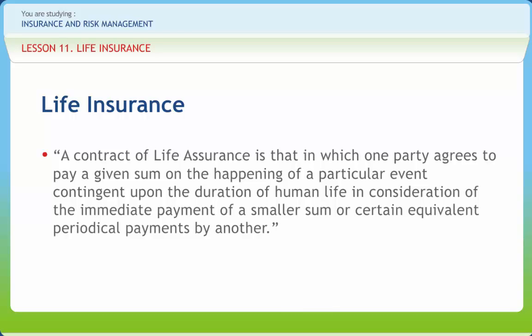An untimely and premature death of the bread earner brings economic disaster to the dependent family. The government can have some social security schemes for the socially and economically backward sections of the society, that is, for people below the poverty line. Group efforts can be made available through group life or accident or health insurance schemes. A person makes his own personal financial plan and decides where he would like to invest his savings. Several instruments are offered by the public sector and private sector. There is nothing more uncertain than life and nothing more certain than life insurance. Hence, among all the above security measures, life insurance is the best guard for an individual and his family.